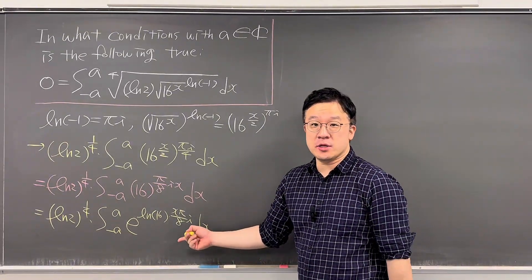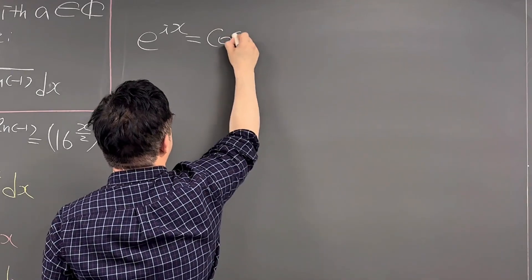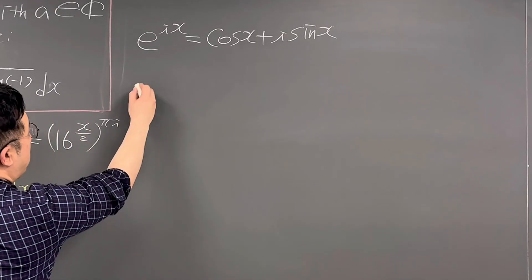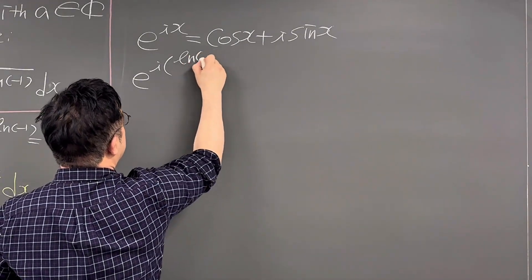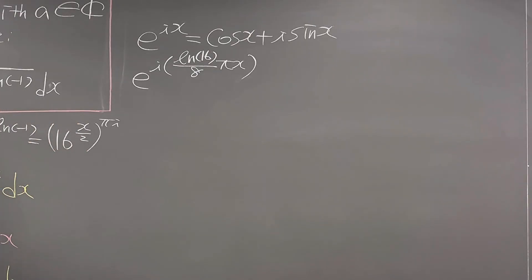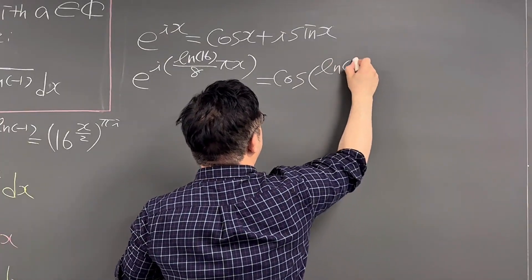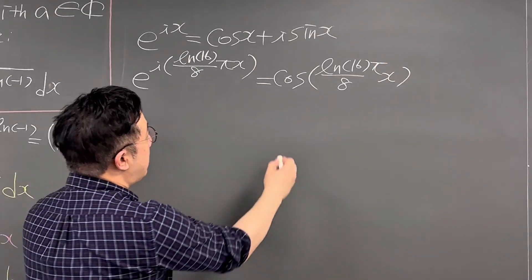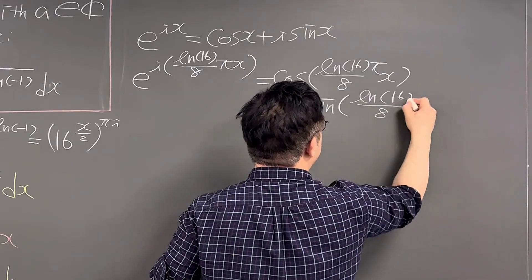Now it's time to use Euler's formula. For Euler's formula, e to the power of ix equals cosine(x) plus i times sine(x). Applying this, we get cosine of (LN(16)/8 · πx) plus i times sine of (LN(16)/8 · πx).